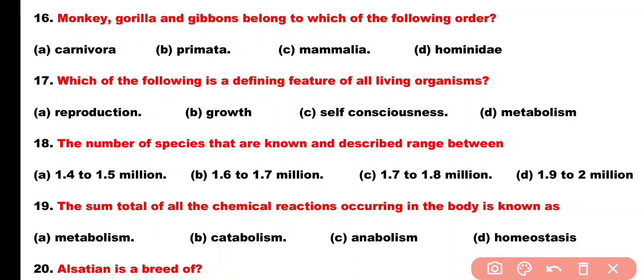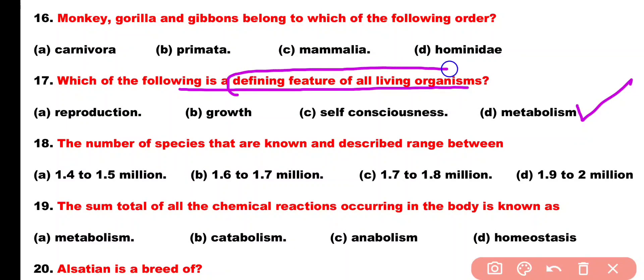Question number 17. Which of the following is a defining feature of all living organisms? Option A: Reproduction, Option B: Growth, Option C: Self-consciousness, Option D: Metabolism. Correct answer is Option D. Metabolism is the most defining feature of all living organisms.